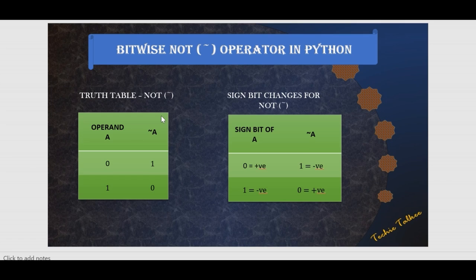NOT of a positive number will result in a negative number, and NOT of a negative number will result in a positive number. This means that we are going to deal with signed binary values. Since bitwise NOT reverses the bits, it only needs one operand, variable, or value to perform the operation.